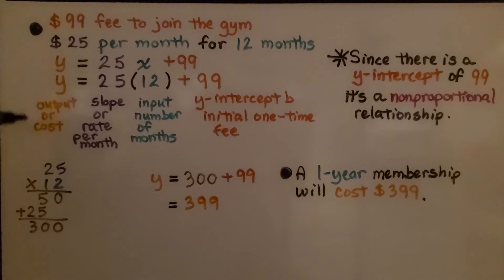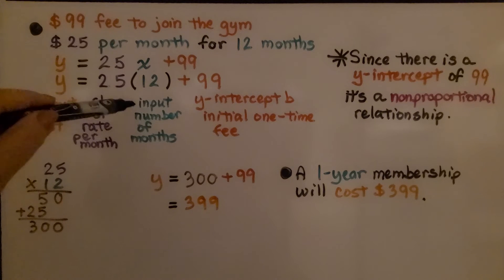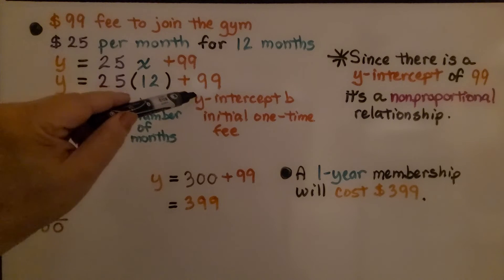The y is the output or the cost. The 25 is the slope or the rate per month. x, which is going to be 12, is the input number of months. And 99 is our y-intercept b. That initial one-time fee that we have to pay.